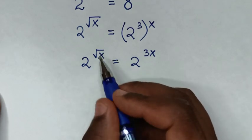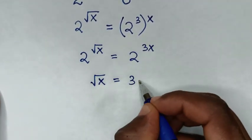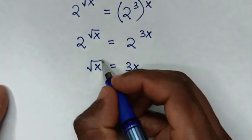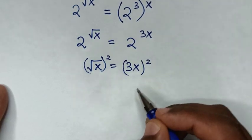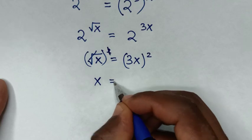So it will be square root of x is equal to 3x. Then to remove this square root, we will square both sides. So this square root will cancel this square, then it will be x is equal to,